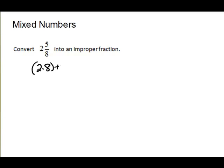Add the numerator and it goes back over the original denominator. It's easier to do than it is to write the steps — you don't have to write the steps. But it's 2 times 8 is 16, plus 5 gives us 21. Put it back over the original denominator.